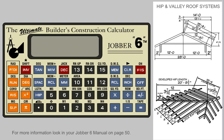The Jobber 6 can make calculating hip and valley roof systems extremely fast and easy. Once the data for the common rafters has been put in the calculator using the triangle keys, solving the developed hip roof system, including jack rafters, can be performed in seconds.